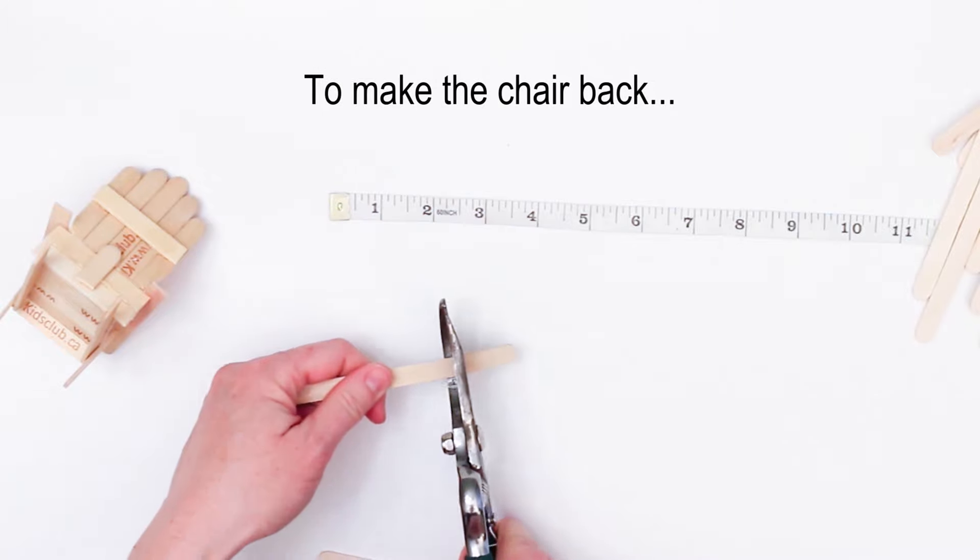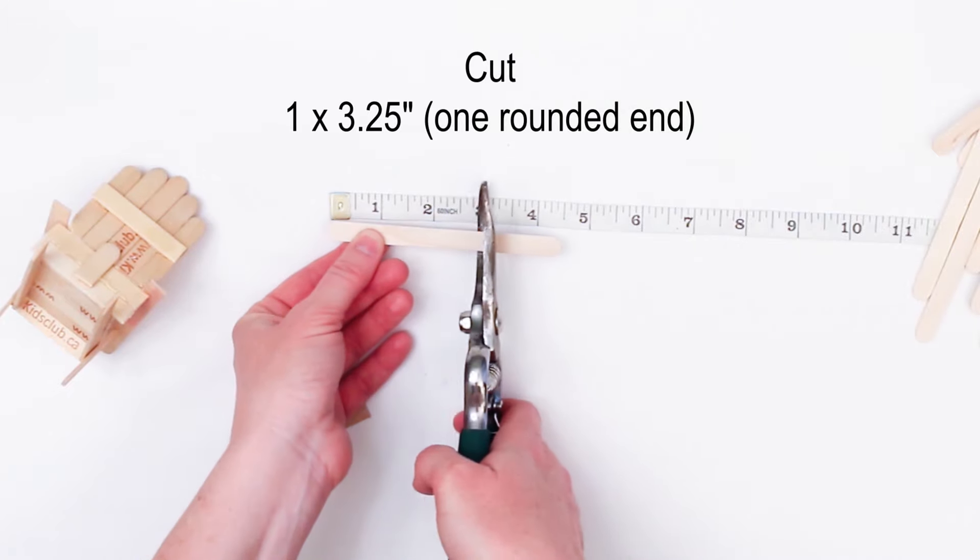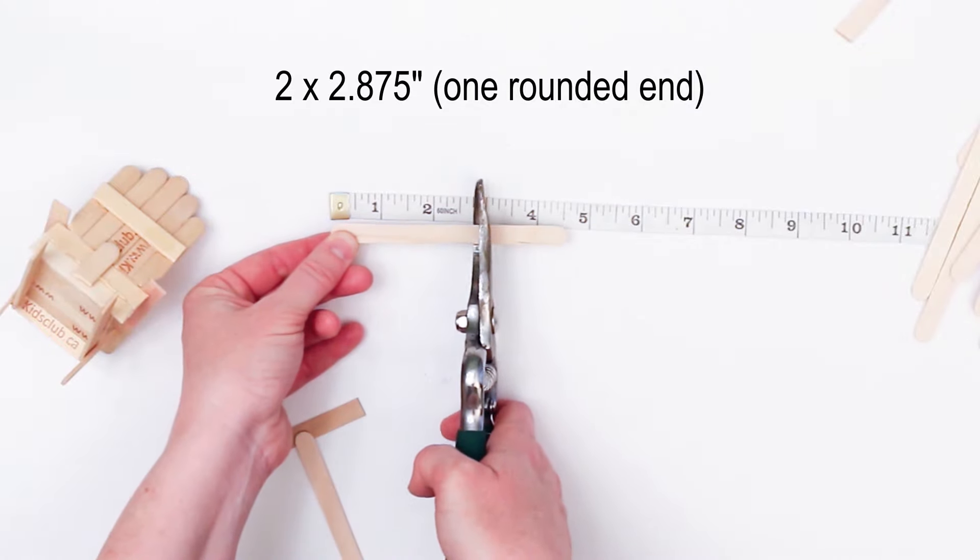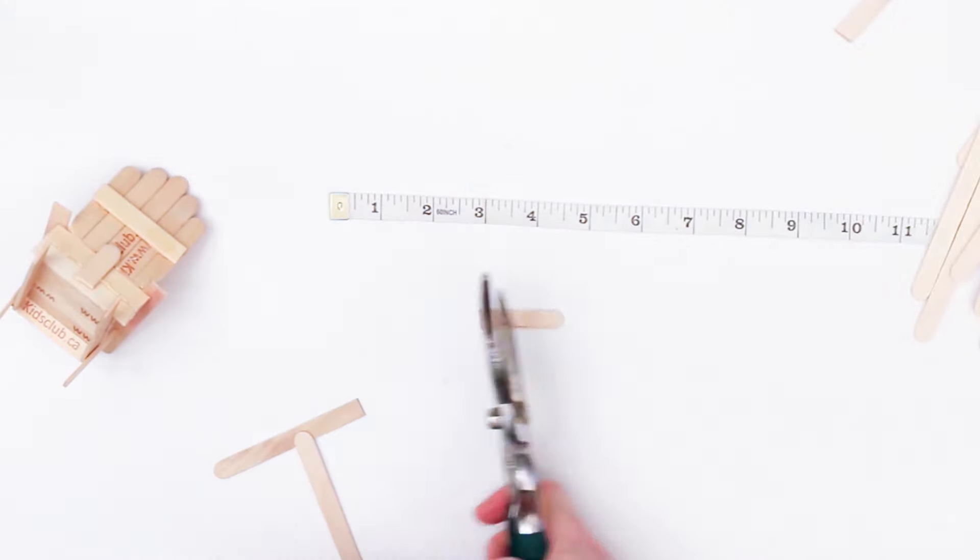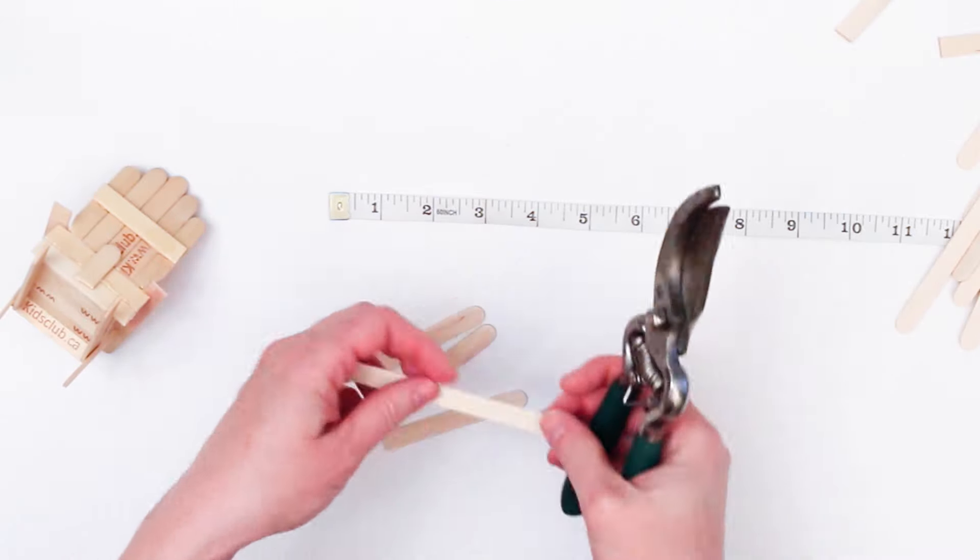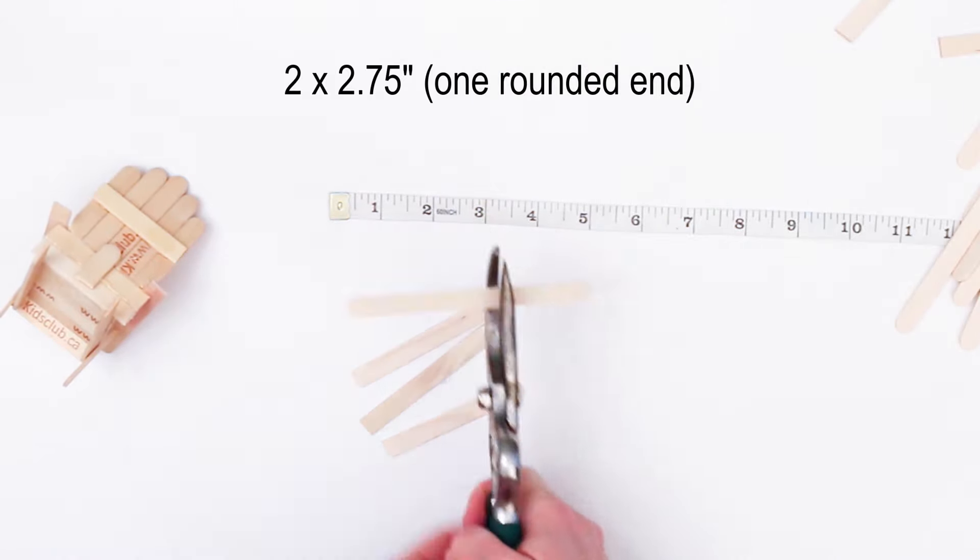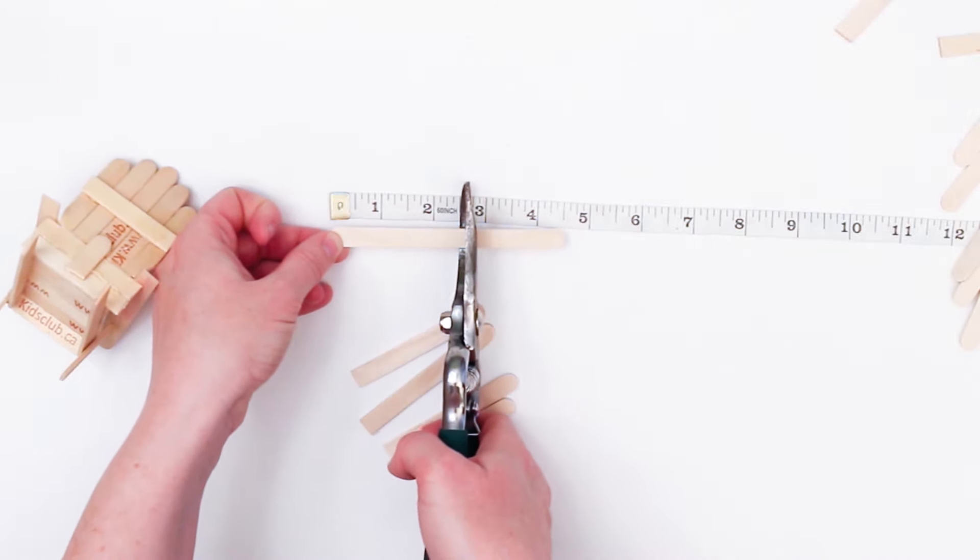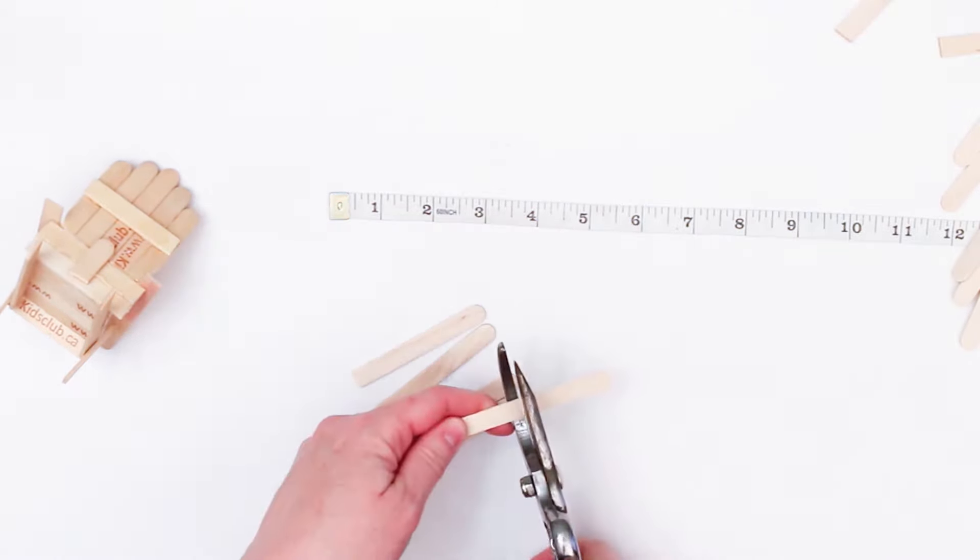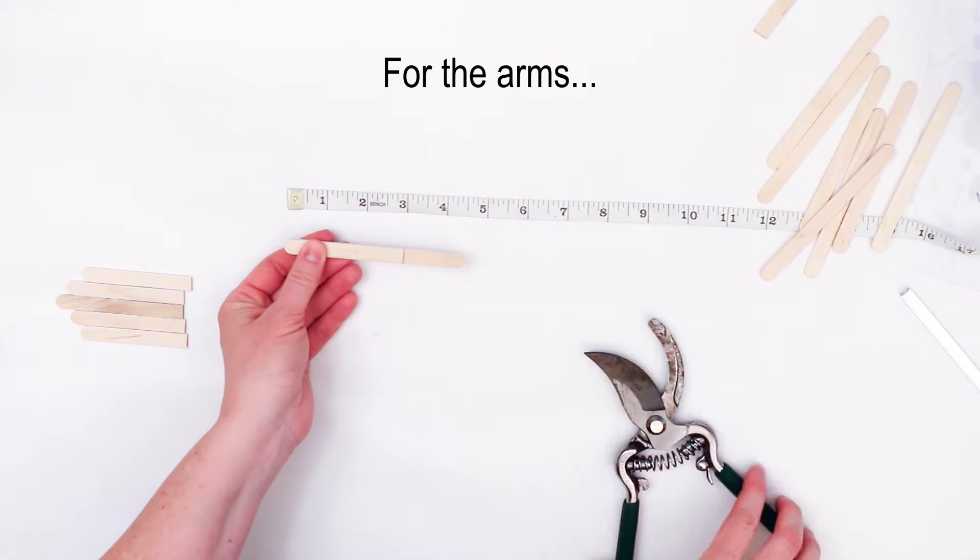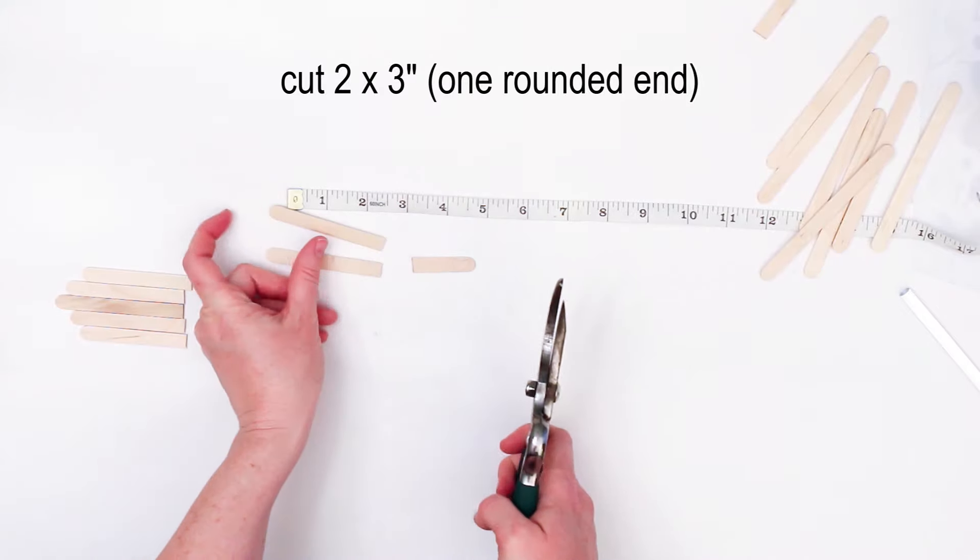We're going to start by cutting out all the wood craft stick pieces using the project guide or follow along with this video. For the chair back we're going to cut out five popsicle sticks of slightly varying lengths leaving the rounded end of the sticks intact. Next we'll cut two pieces three inches long again leaving one rounded end intact.